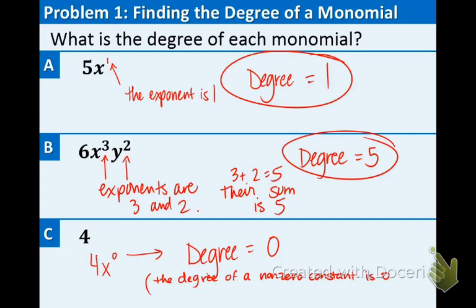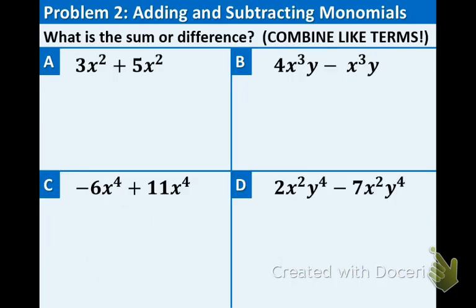Remember, basically what we're doing here is we're looking at the exponents of the variables. And if there's more than one variable, then we are going to add those exponents to get the degree.